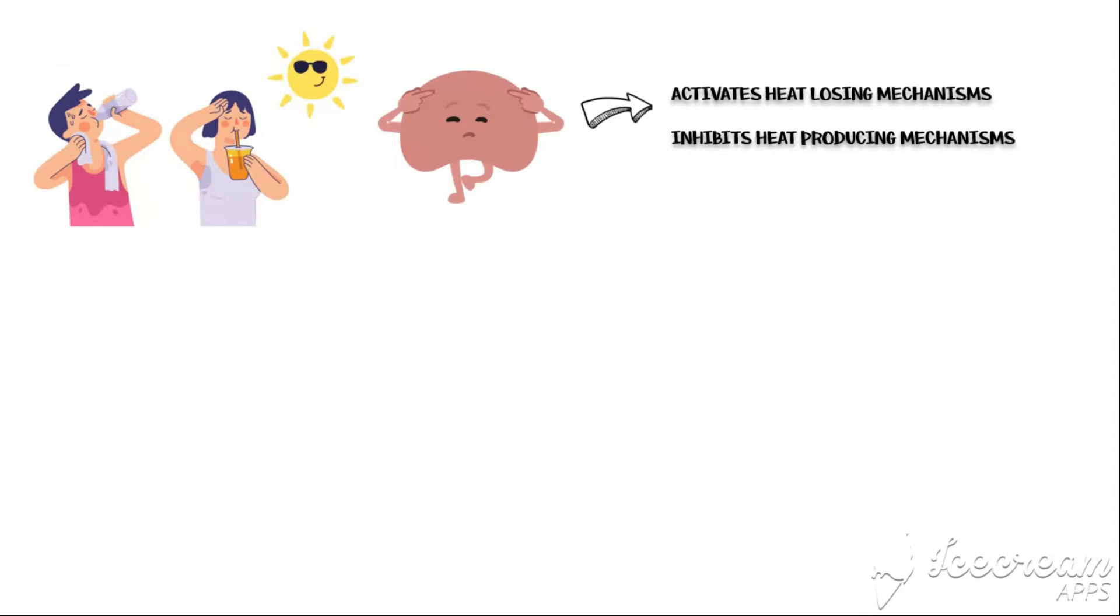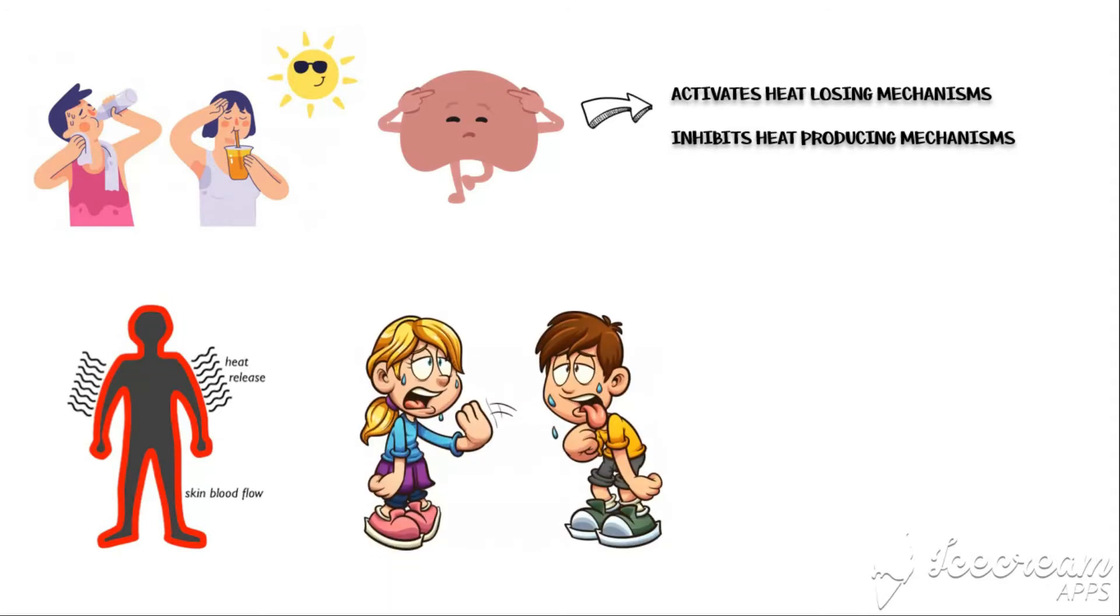To increase the heat loss, the hypothalamus increases the blood supply to the skin. By doing so, it increases heat loss through radiation. The hypothalamus also increases the production of sweat. When sweat evaporates, it absorbs more heat from the body.